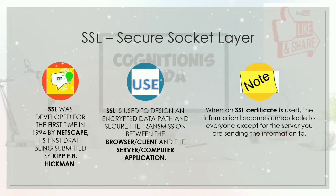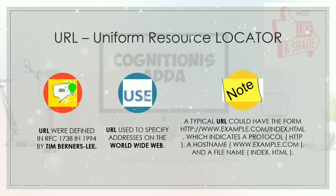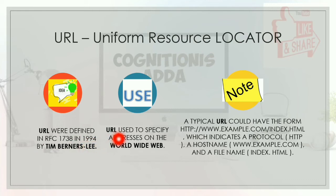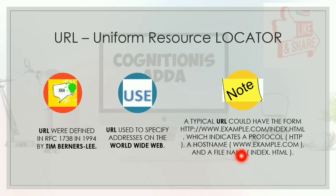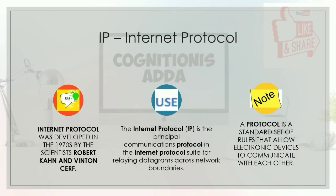When an SSL certificate is used, the information becomes unreadable to everyone except the server you are sending the information to. Next is URL — Uniform Resource Locator. URLs were defined in RFC 1738 in 1994 by Tim Berners-Lee. A URL is used to specify addresses on the World Wide Web, and a typical URL could have a form indicating a protocol, a host name, and a file name.